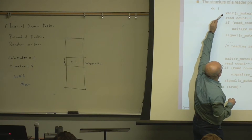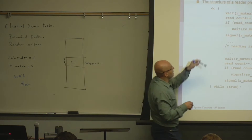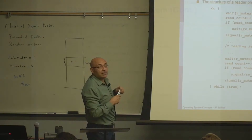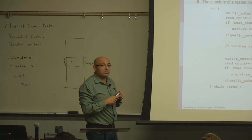The critical section between wait and signal currently has three lines: increment read count, check if read count is one, and wait on RW mutex. In an attempt to minimize the critical section, we could move the signal earlier — between the read and the if — putting the check outside the critical section. This would reduce the critical section from three lines to one. But will this work correctly?